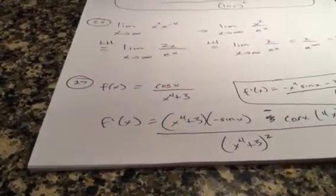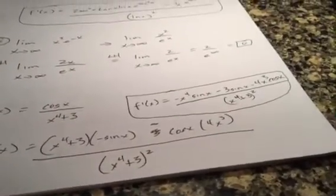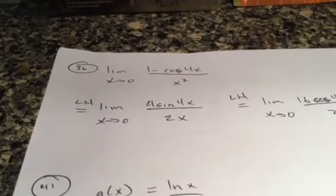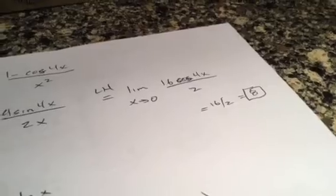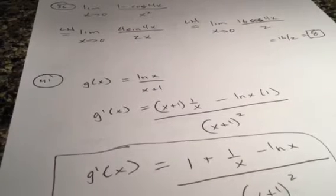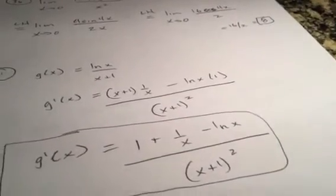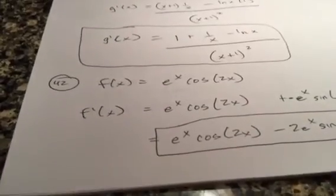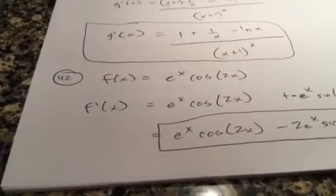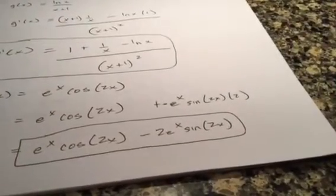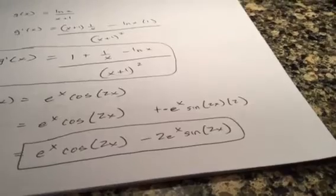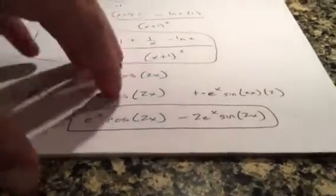On number 27, use the quotient rule: low d high minus high d low over low squared. You can pause this whenever you need to — there are a lot of good answers here. For the next one, use L'Hôpital's twice; you'll get zero over zero a few times and ultimately 16 over 2, which is 8. Remember: cosine of zero is 1, sine of zero is 0, tangent of zero is 0. On the following problem, use the product rule — make sure when you take the derivative of cosine you get negative sine times 2x, then multiply by the derivative of 2x, which is 2.